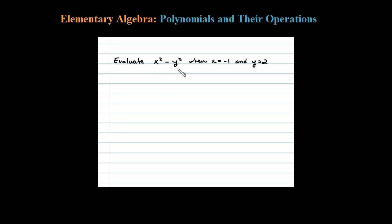We're asked to evaluate x squared minus y squared given x and y. When I do these, I like to put blank parentheses wherever there's a variable first, and then substitute in the appropriate values. So x squared — x is given to be negative 1 — and then minus y squared, where y is given to be 2.